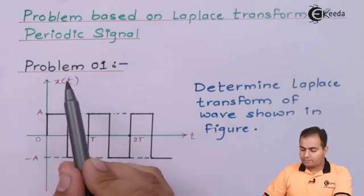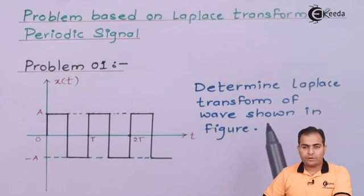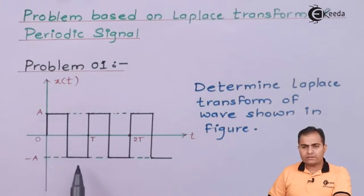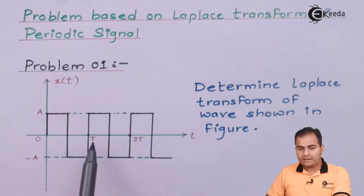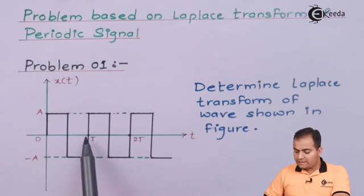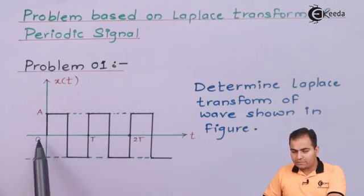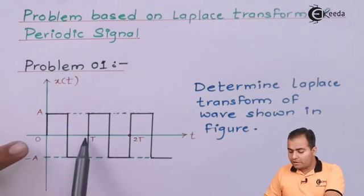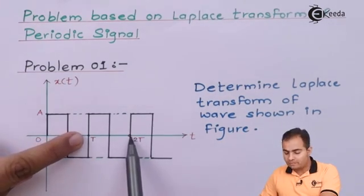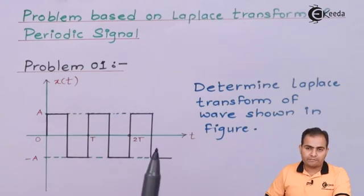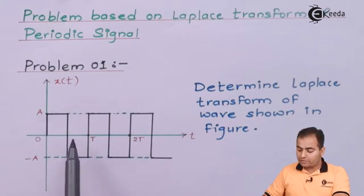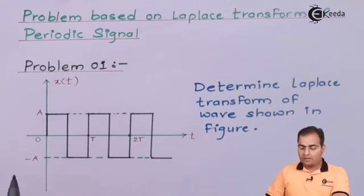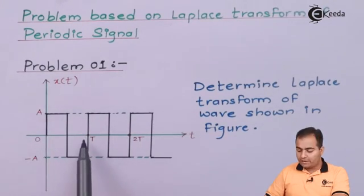Problem number 1: determine the Laplace transform of the waveform shown in the figure. Here we can see it is a simple square wave with period T. The graph from 0 to T is the first period. The same plot repeats from T to 2T and continues till infinity. That's why it is not necessary to find the Laplace transform of the entire graph — only find the Laplace transform of the first period from 0 to T, as the same value repeats after each time period.